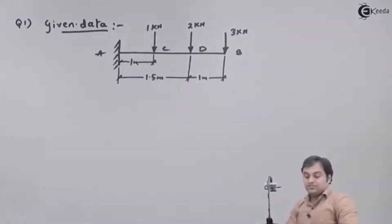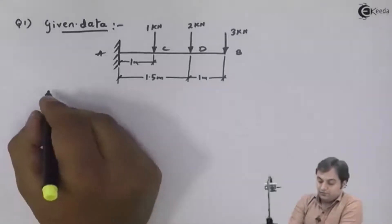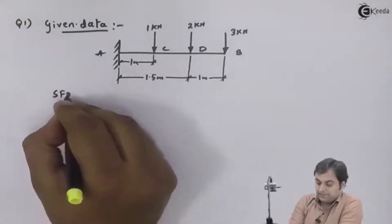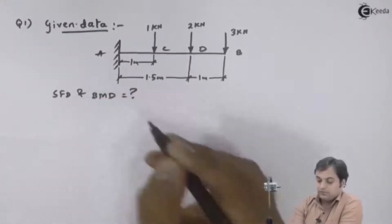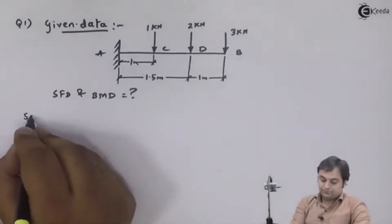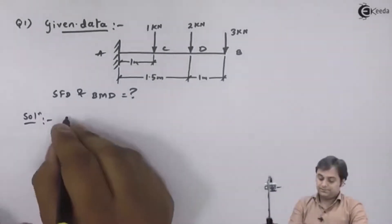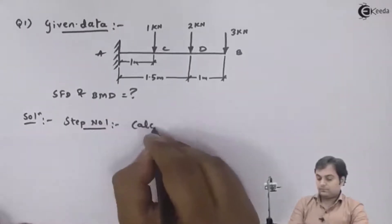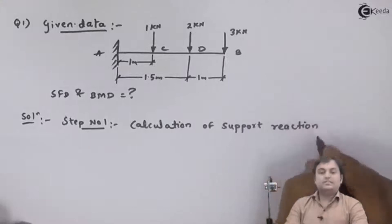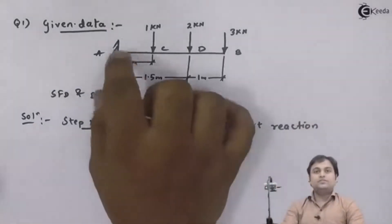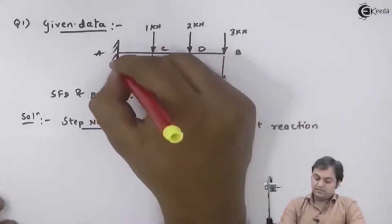This is the diagram given in the question. We have to draw the shear force diagram and bending moment diagram for this beam. Starting the solution, the first step is calculation of support reaction. As we have a cantilever beam which is fixed at one end, there will only be a reaction at that one fixed end.